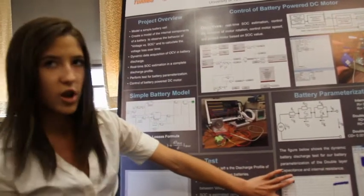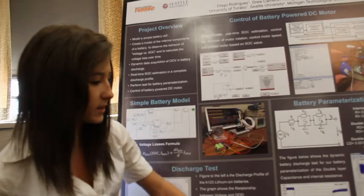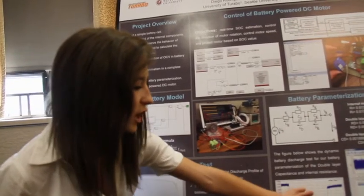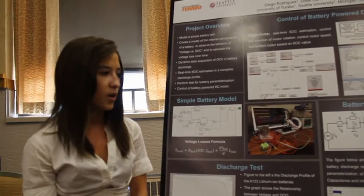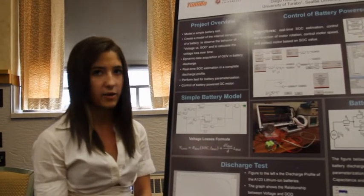So this voltage drop is based on the internal resistance, and this change in voltage is based on the double layer capacitance. So we then use that to parameterize the battery.